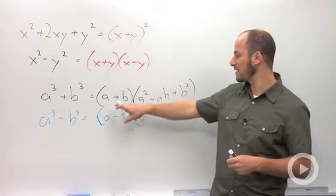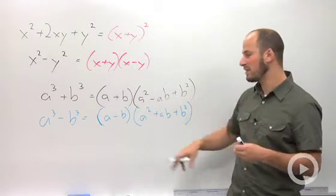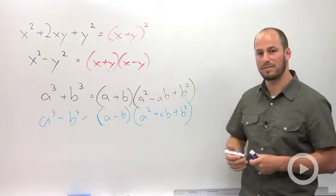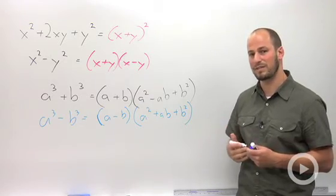So as long as you can remember the a, b, a squared, a, b, and b squared, just remember that your signs are the same as you started, opposite, and then always positive. So just two more formulas you need to add to your repertoire for factoring.